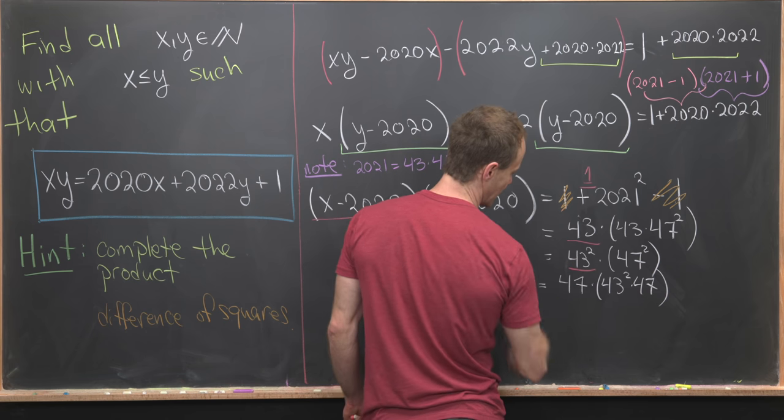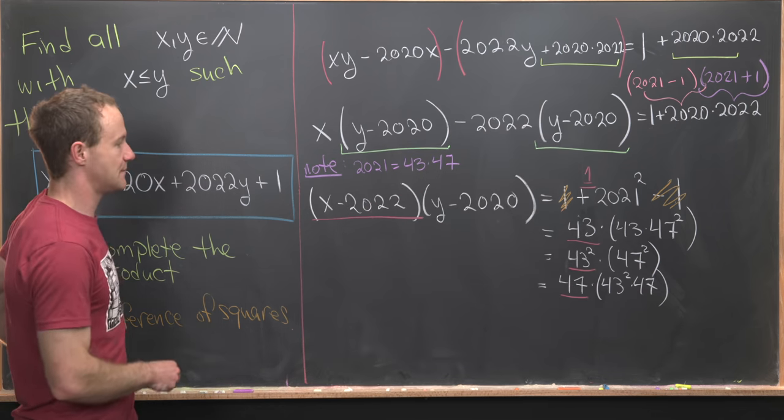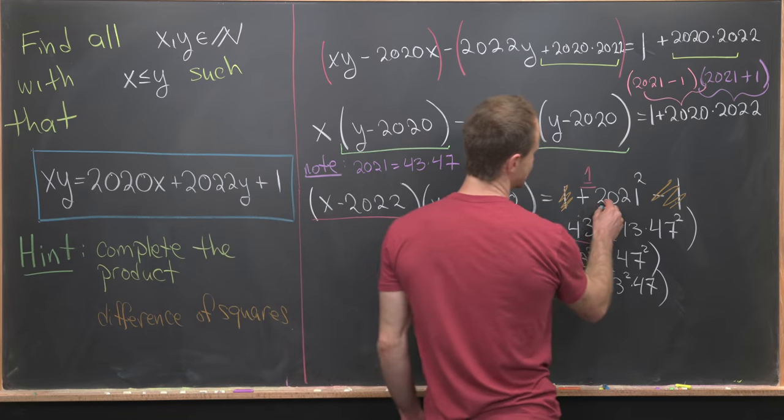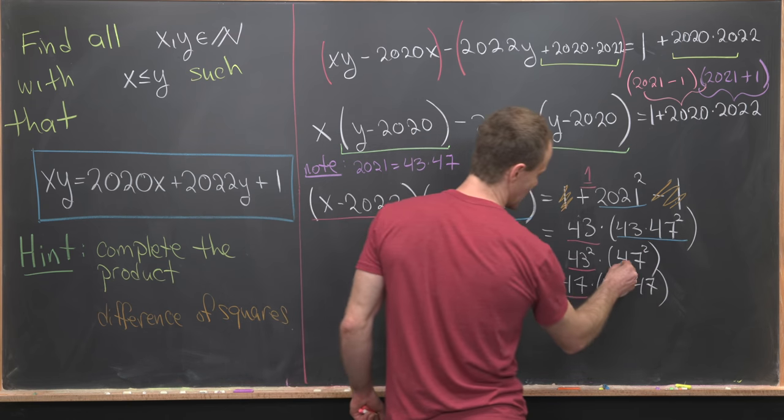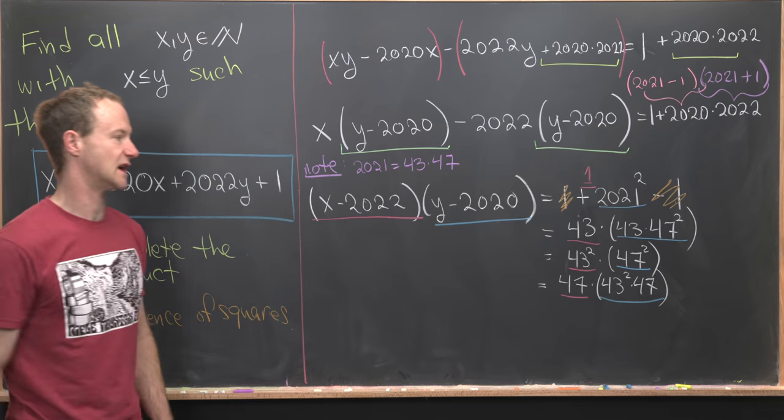...a 43 right here, a 43² right here, and a 47 right here. And then this blue underlined bit will correspond to our 2021² here, our 43×47² here, this 47², and then this 43²×47.